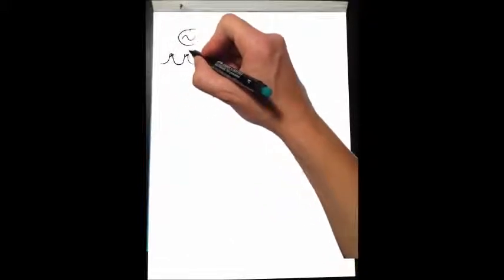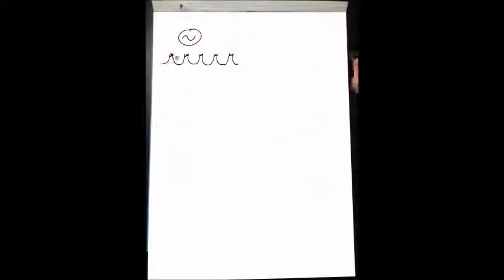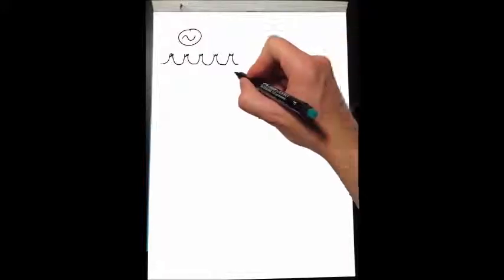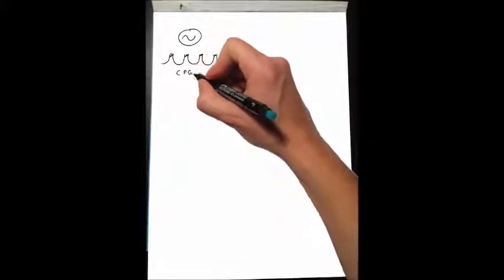I am going to depict rhythmic activity here as this wave of electrical activity that occurs in neurons. Changes in the electrical activity underlie all communication in the nervous system and from the nervous system to the muscles. We call neurons that autonomously produce rhythmic activity central pattern generators or CPGs.